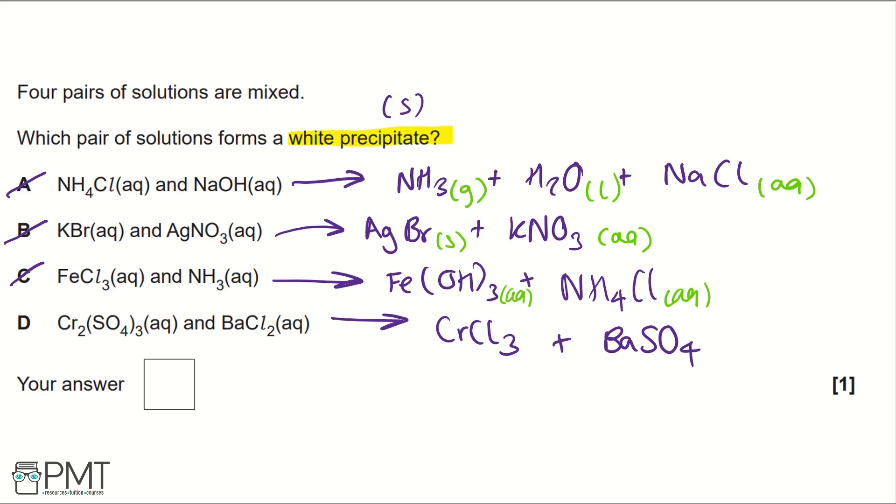So, writing the state symbols, barium sulfate is a solid, and chromium chloride is aqueous. But we have a solid, barium sulfate is white, and it's a white precipitate.